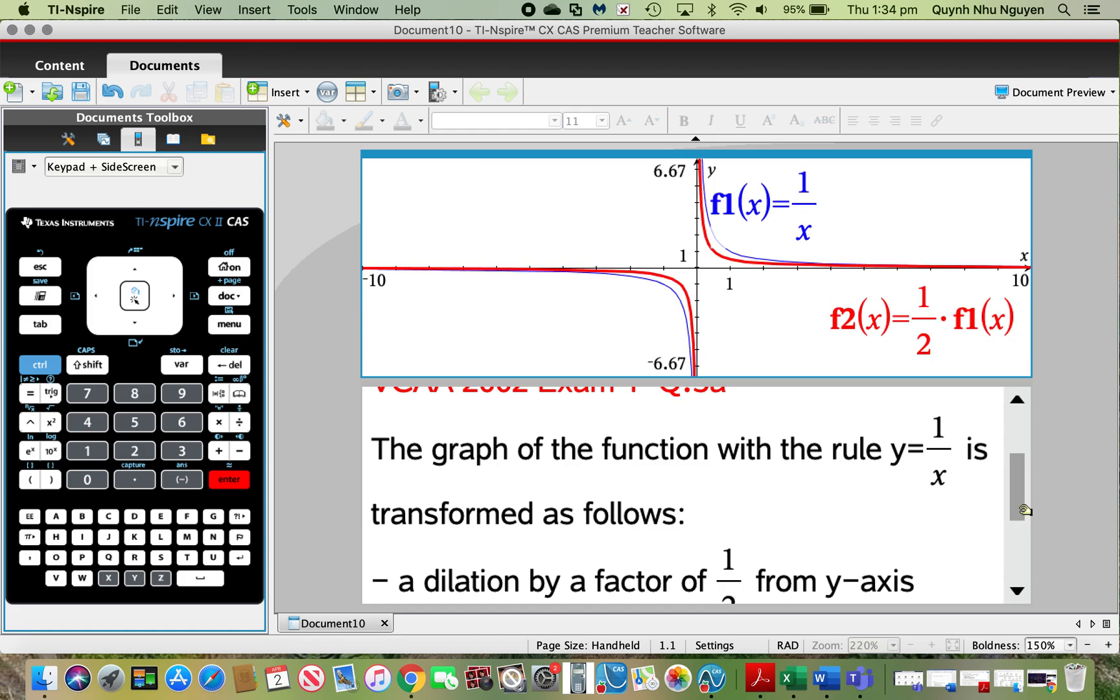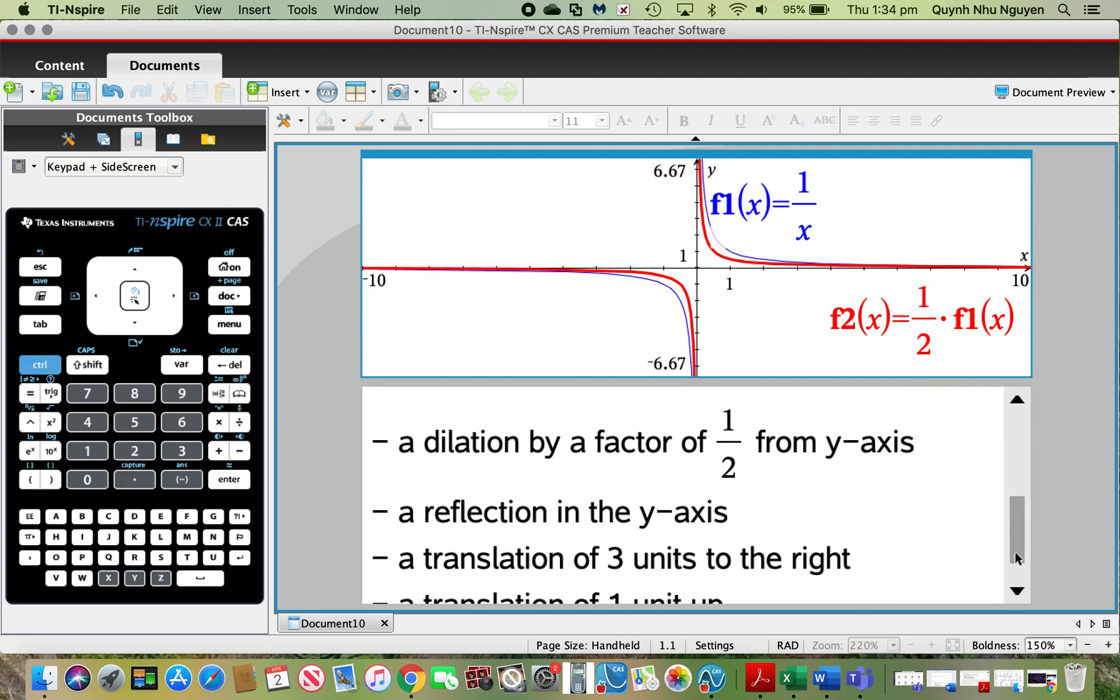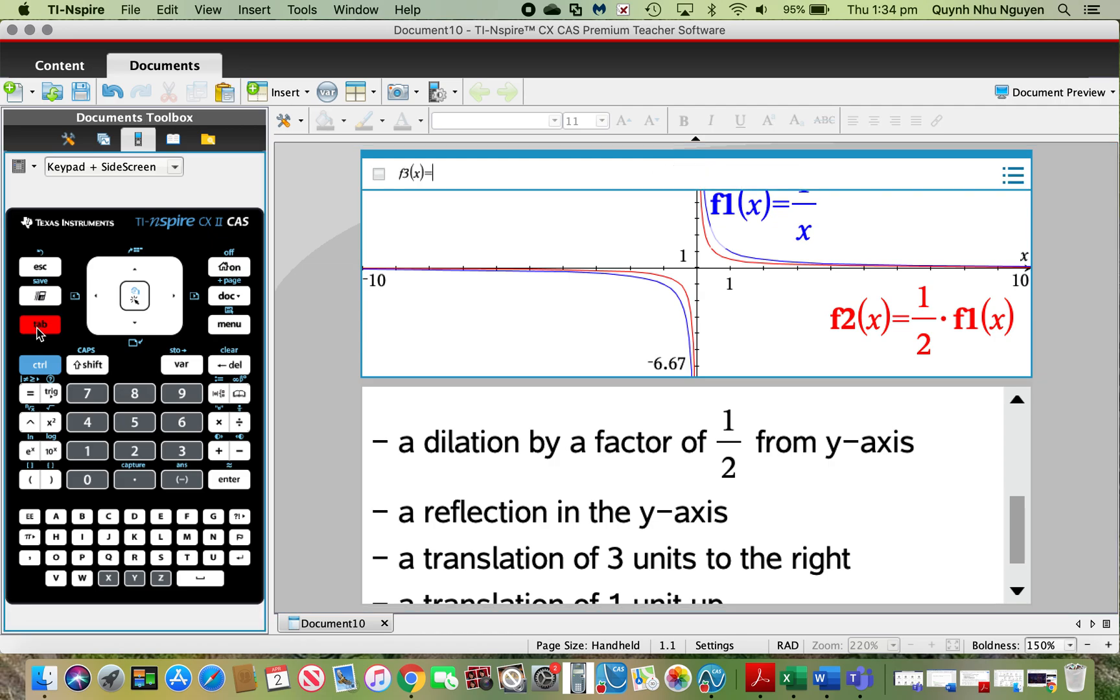Now I'm going to move on to the next transformation: a reflection in the y-axis. If we're going to have a reflection in the y-axis, go tab, and now I should have f3. So this will simply be negative f2(x). Don't forget to press in x. Enter.